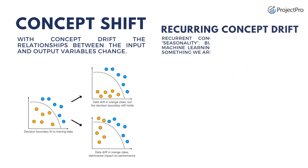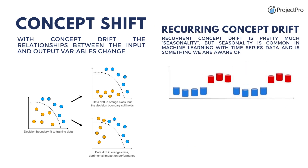The last type of concept shift is recurring concept shift, which happens due to a seasonality effect. In time series data, after a certain period — like weekdays, weekends, or year-end holidays — our model performance goes down because the customer buying pattern or behavior has changed in those time frames. However, this shift is not as critical because it happens only for a certain period and not for longer periods of time.